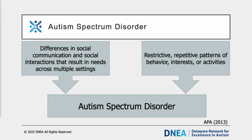For the purposes of this training, we are going to discuss the core characteristics of autism in general terms. There are two areas of development that differ in individuals with autism: differences with social communication, and a demonstration of restricted repetitive patterns of behaviors or interests. Differences in social communication and social interactions can manifest in a variety of ways, including limited or absent speech, trouble comprehending others' emotions or non-verbal communication, or difficulty maintaining a back-and-forth dialogue.